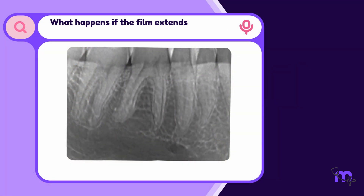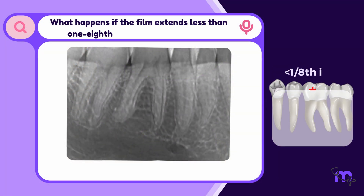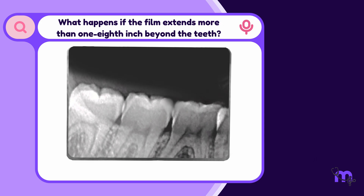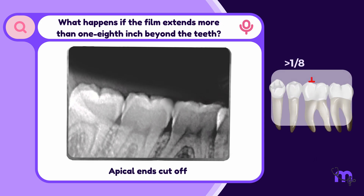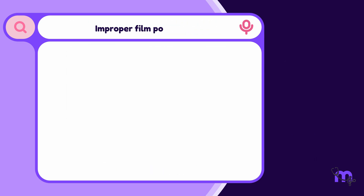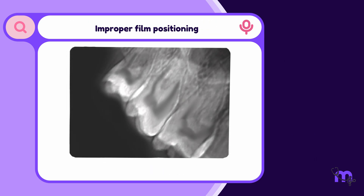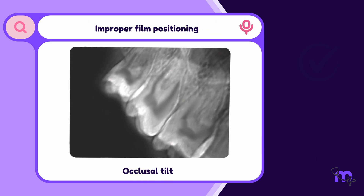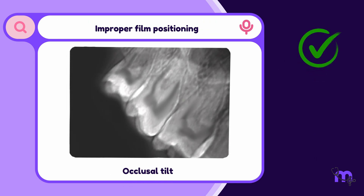If the film extends less than 1/8 inch beyond the teeth, the final image does not capture the crowns or occlusal ends. Conversely, the apical ends may be cut off if more than 1/8 inch extends beyond the teeth. Improper film positioning also leads to an error called occlusal tilt. To avoid this error, the film is placed parallel to the teeth.